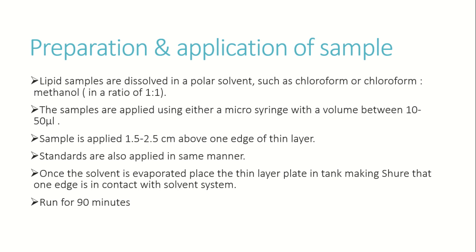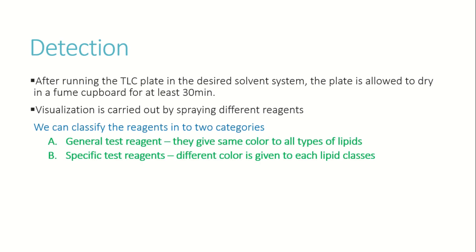Apply the sample at one edge, 2 to 2.5 cm from the bottom, making one spot per lane — sample and standard. Run the chromatography. Note that paper chromatography takes 18 to 24 hours, which is an important disadvantage compared to TLC.